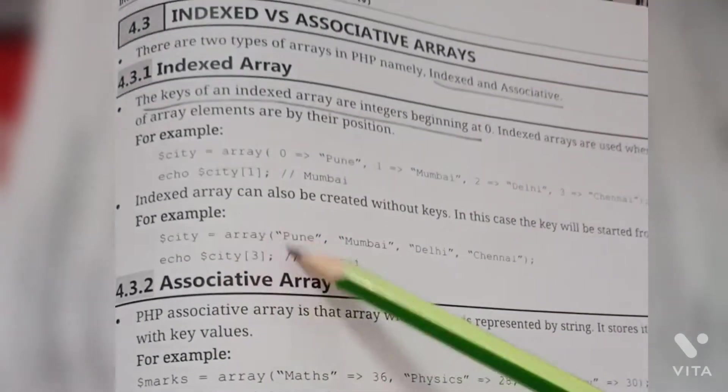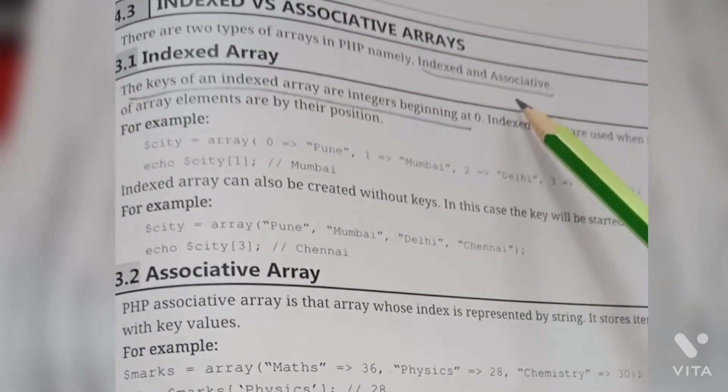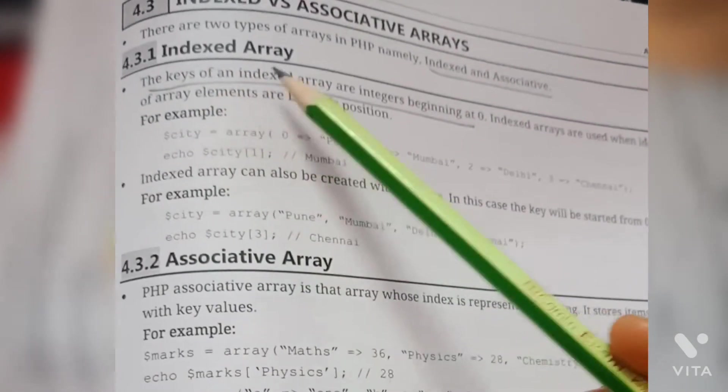There are two types of arrays in PHP: number one is indexed and number two is associative. Let's start with the first one, indexed array.